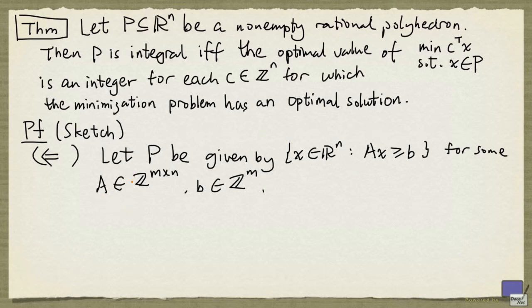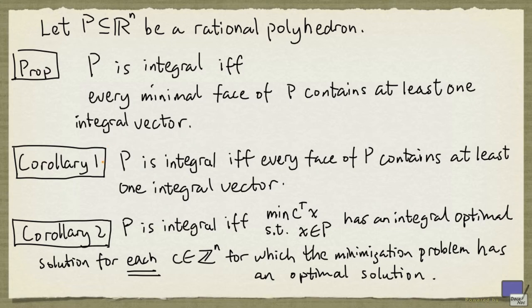Suppose that p is not integral. Then by the proposition here, p has a minimal face that does not contain an integral vector.